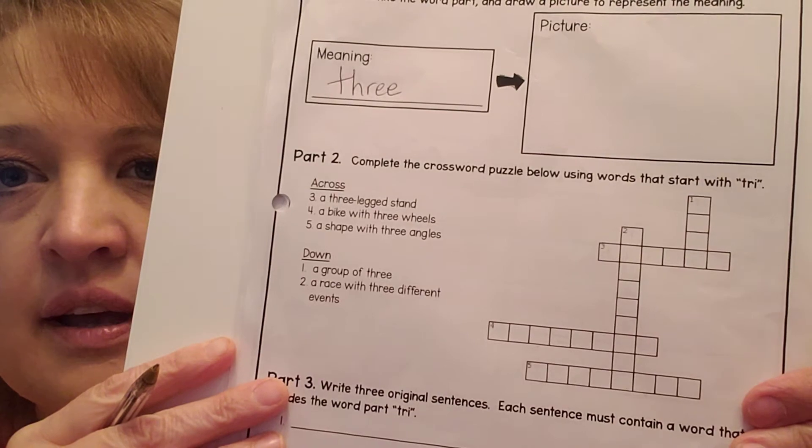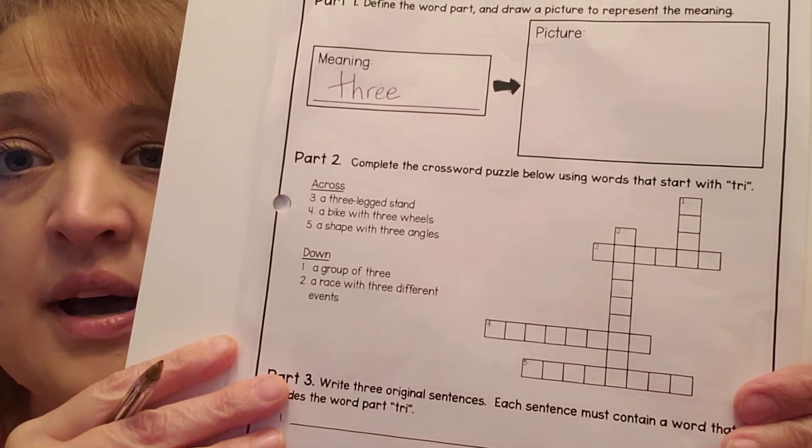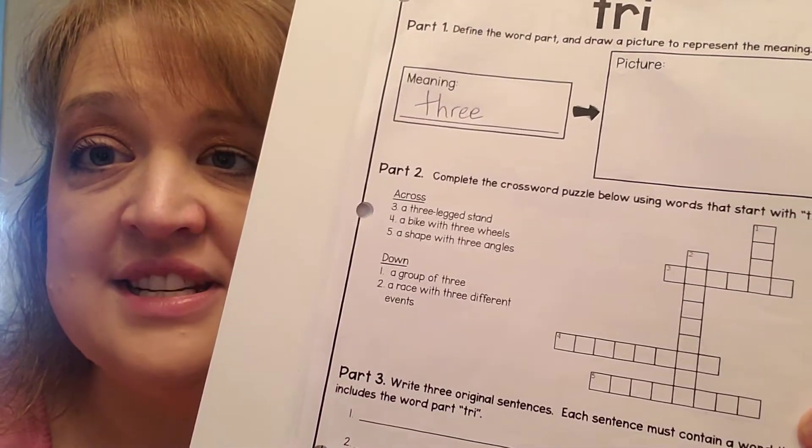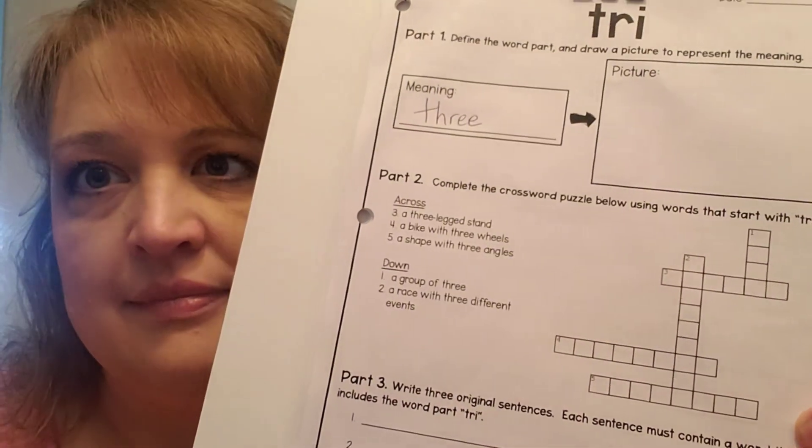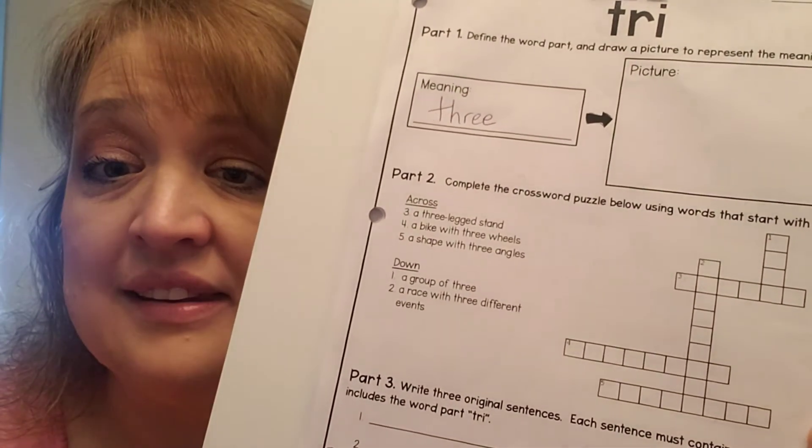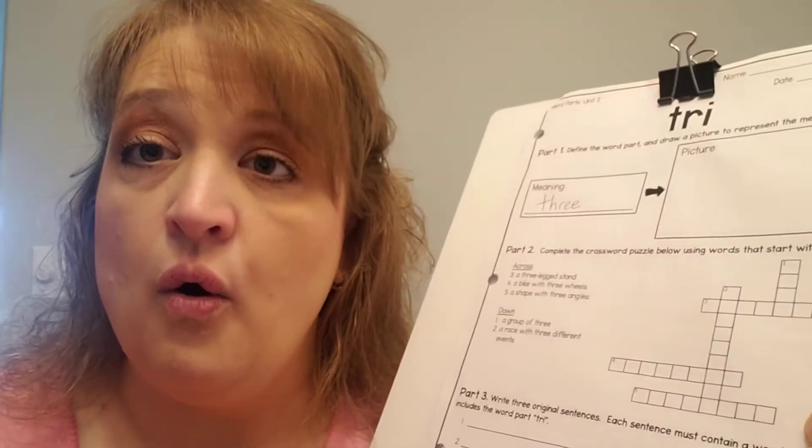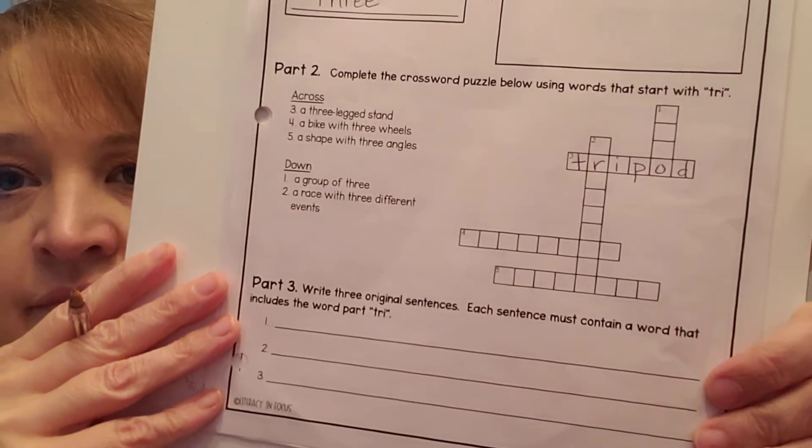All right, so let's look at number one. A three-legged stand. Now remember, it's going to have tri in it because it's meaning three. So a tri what? A three-legged stand. Well, I use this every day and you can't see it because it's holding my phone, but I use a tripod. A tripod is something that holds something and it has three legs. It's holding my phone right here while I'm talking to you and it's called a tripod. Okay, so three across is T-R-I, tri, and then pod, P-O-D, tripod.